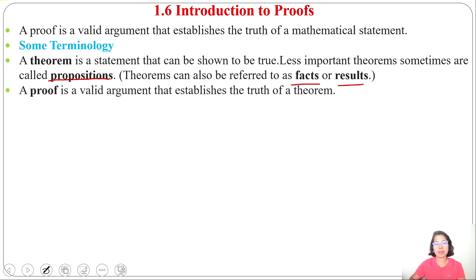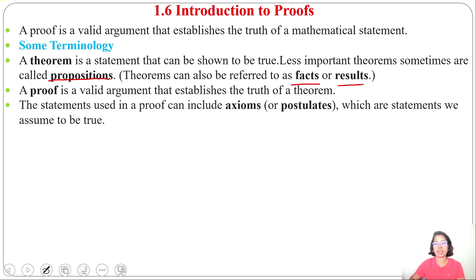Next is proof. A proof is a valid argument that establishes the truth of a theorem. Next is axiom. A statement used in a proof can include axioms, also called postulates, which are statements we assume to be true.